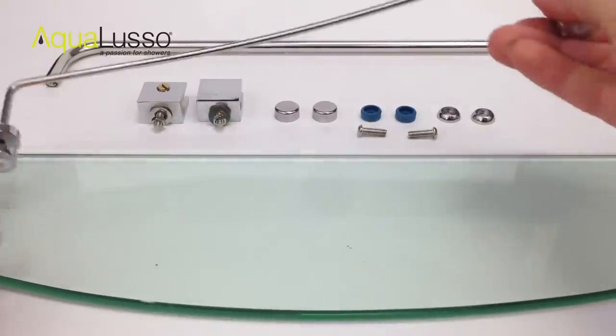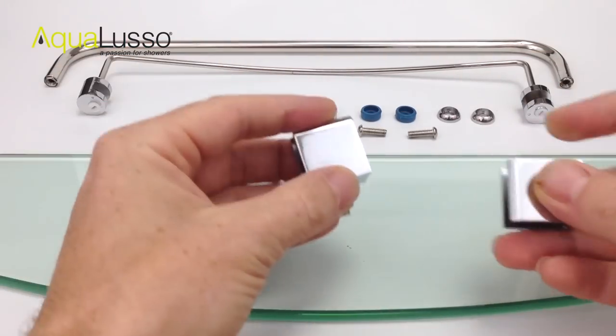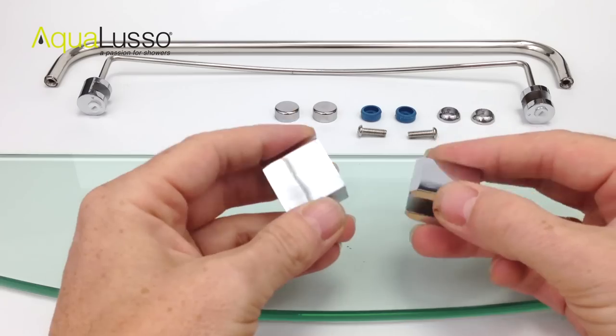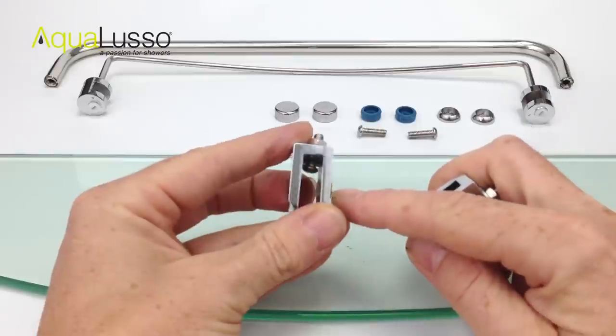You'll also have a pair of fixing brackets. These fit onto the back edge of the shelf and join to the rear cabin walls. You have a little screw fixing which is designed to hold the glass in place.